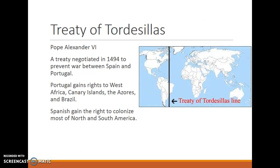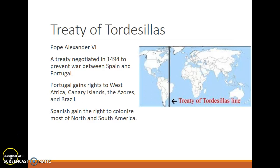In 1494, the Pope negotiated a treaty between Spain and Portugal where they divided up the world between themselves. Under the Treaty of Tordesillas, a line was established across the globe — anything to the west was reserved for Spanish settlement, exploitation, and conquest, while anything to the east was reserved for Portugal. Of course, none of the Protestant nations of Europe recognized the legitimacy of this agreement. Thank you for your time. This concludes our mini-lecture.